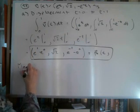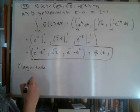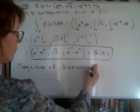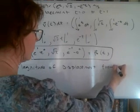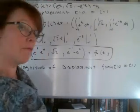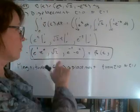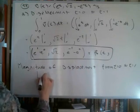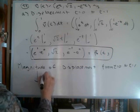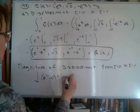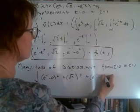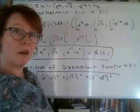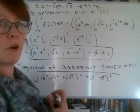When we go to calculate the magnitude, we're going to calculate the magnitude of our displacement from time t equals zero to time t equals one, using the displacement we found. We're going to take each component — e to the one minus e to the zero squared, radical two squared, e to the minus one minus e to the zero squared — sum the squares, and take the square root to get the magnitude.